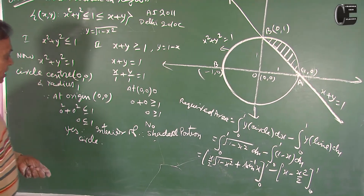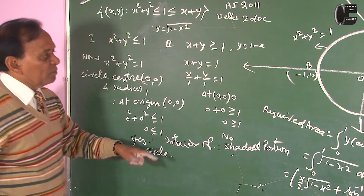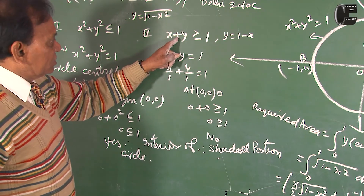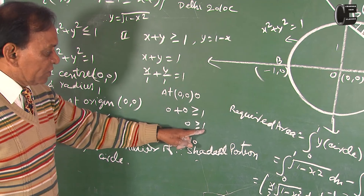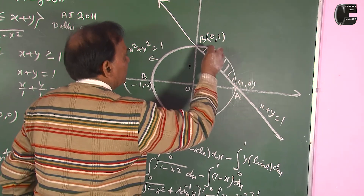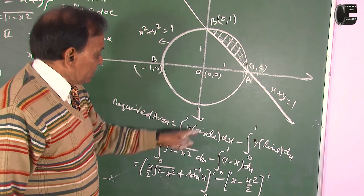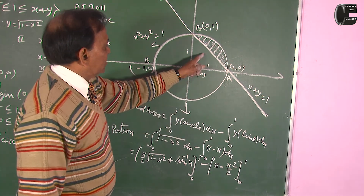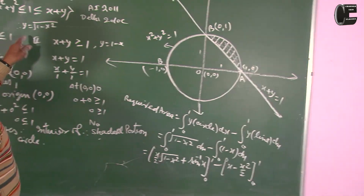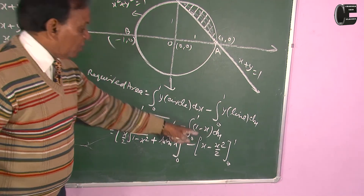We determine which area to take. At origin, put x=0, y=0 in x squared plus y squared: 0 less than 1 — yes, so interior portion of the circle is taken. For the straight line, at origin put x=0, y=0: 0 plus 0 greater than or equal to 1 — no, not possible. Therefore we take the portion of the circle that does not contain the origin relative to the line. The shaded area equals the integral of y for circle dx minus the integral of y for the line from 0 to 1, where y for circle equals under root of 1 minus x squared.